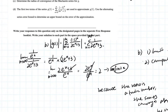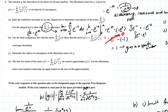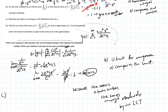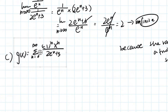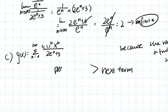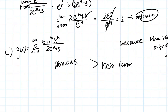Part C asks us to determine the radius of convergence of the Maclaurin series for g. We use the ratio test: in order for a series to converge, the next term must be smaller than the previous term. So the ratio of consecutive terms must be less than one.